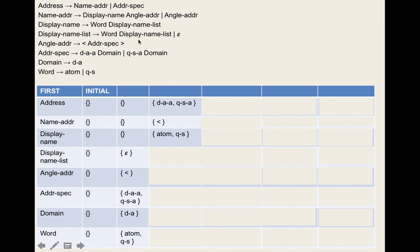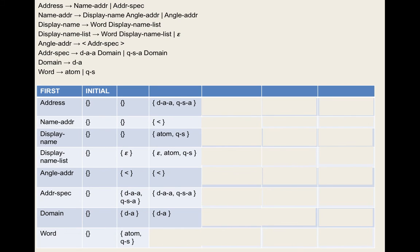We run through the follow sets one more time and get the same results — so we're done. Now, what are we doing all these calculations for? We want to show this grammar supports a predictive recursive descent parser. The two conditions: first, for any non-terminal A with rules A→α and A→β, the intersection of first(α) and first(β) must be the empty set — no ambiguity between rules.